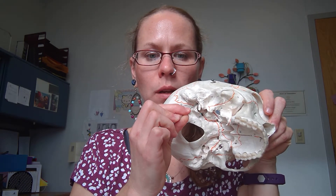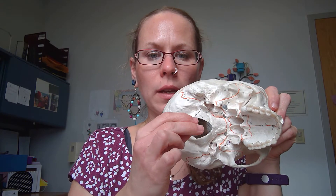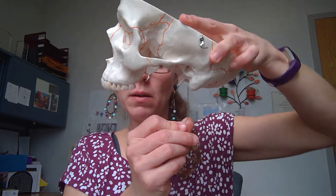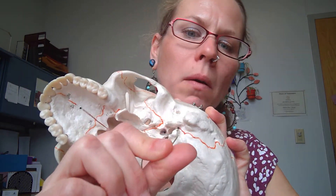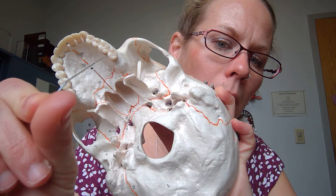We said there are three holes, so we need to find our last one. We're going to find it right here — this is the foramen in between the mastoid process and the styloid process, and it's called the stylomastoid foramen. We're looking here at the underneath side of the temporal bone and we can find it there.